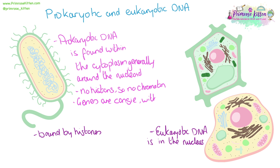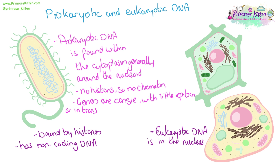In prokaryotes, genes are very concise, with little repetition and few introns. DNA in prokaryotes has lots of non-coding DNA and lots of introns. And finally, eukaryotic DNA is linear, whereas prokaryotic DNA is going to be circular.